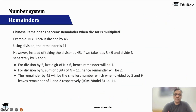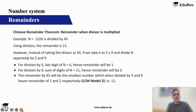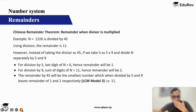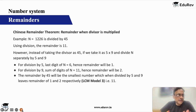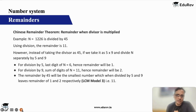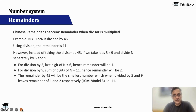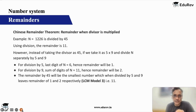Now let us look at a modification of this remainder theorem, which is called Chinese Remainder Theorem. I do not know why it is called Chinese Remainder Theorem, but it uses one of our LCM models. We discussed that if my dividends are getting added, subtracted, or multiplied, then I can do the calculation separately and my remainders also will get added, subtracted, or multiplied. That was on dividends. We have not discussed anything on divisors — what if my divisors are getting multiplied?